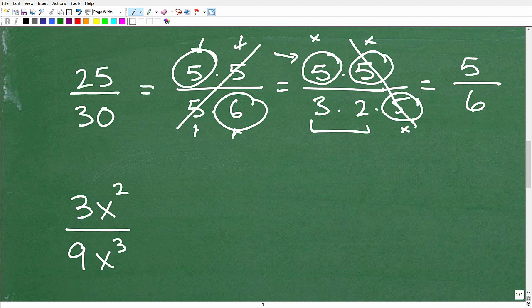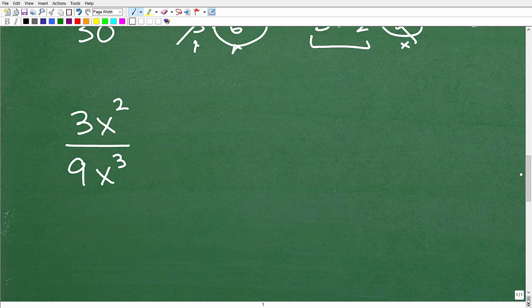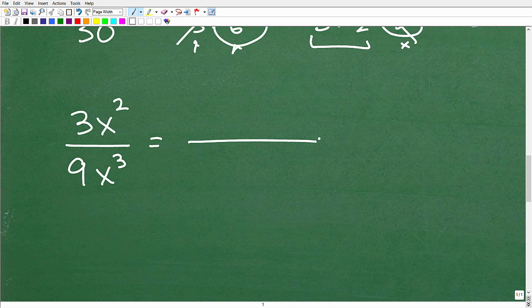All right, so now let's carry this concept over to dealing with a fraction that involves variables. All right, so the same concept applies. So let's go ahead and factor this guy here. So 3 times x squared, so this is going to be 3. The factors of 3 are just 3 and 1. So we'll just write this as 3. And then x squared is the same thing as x times x. So x times x is x squared. All right, now let's go ahead and take a look at the denominator.